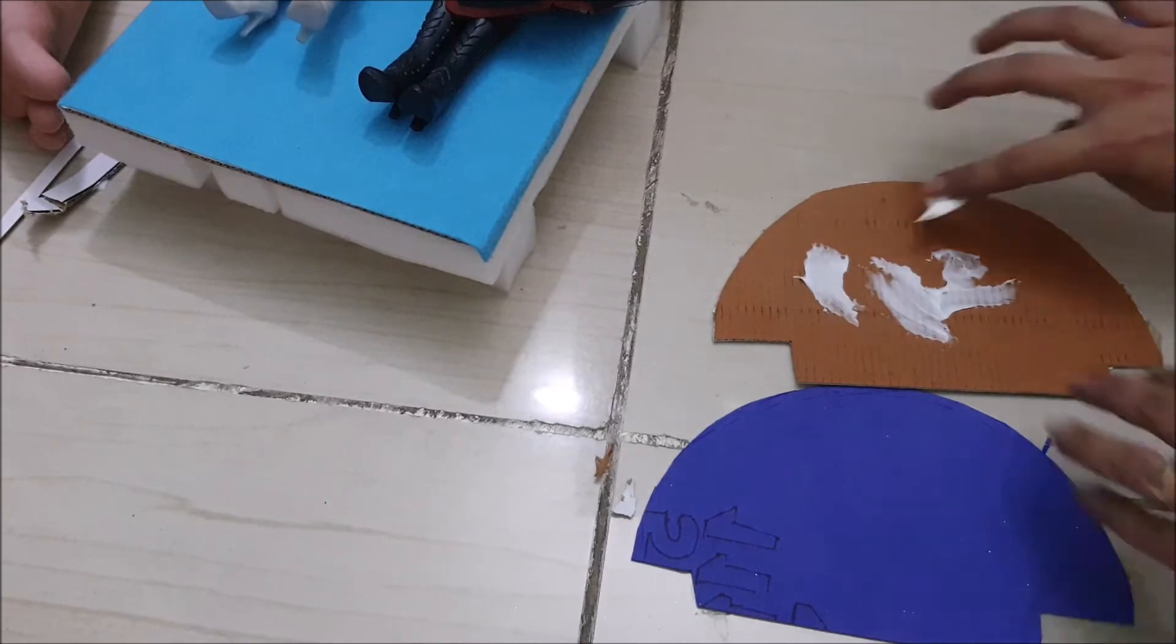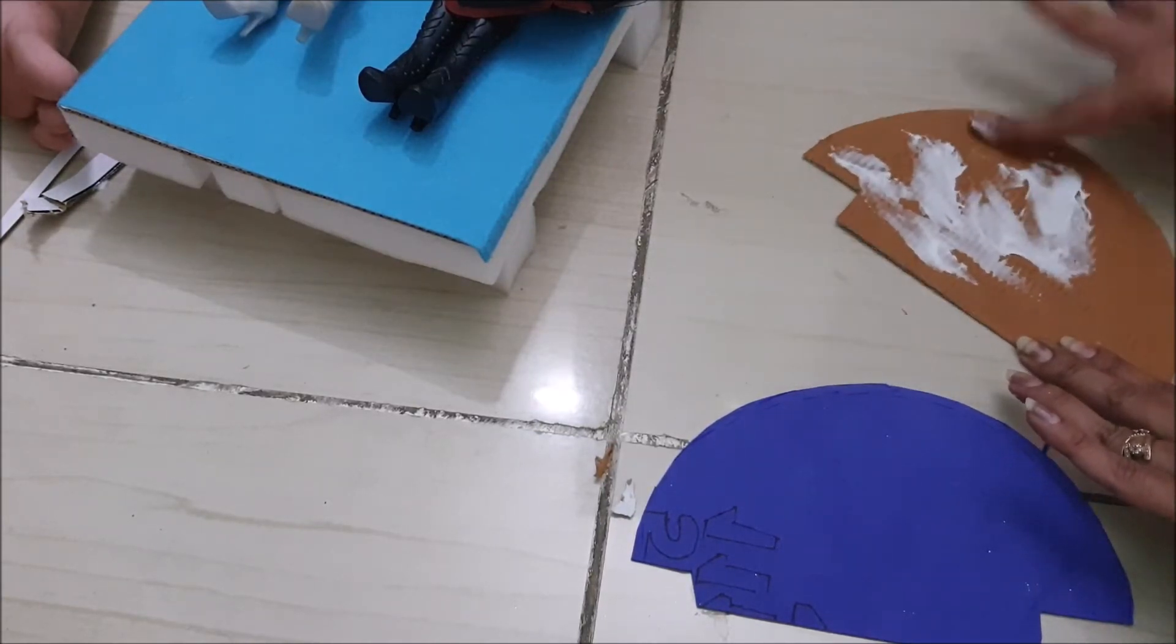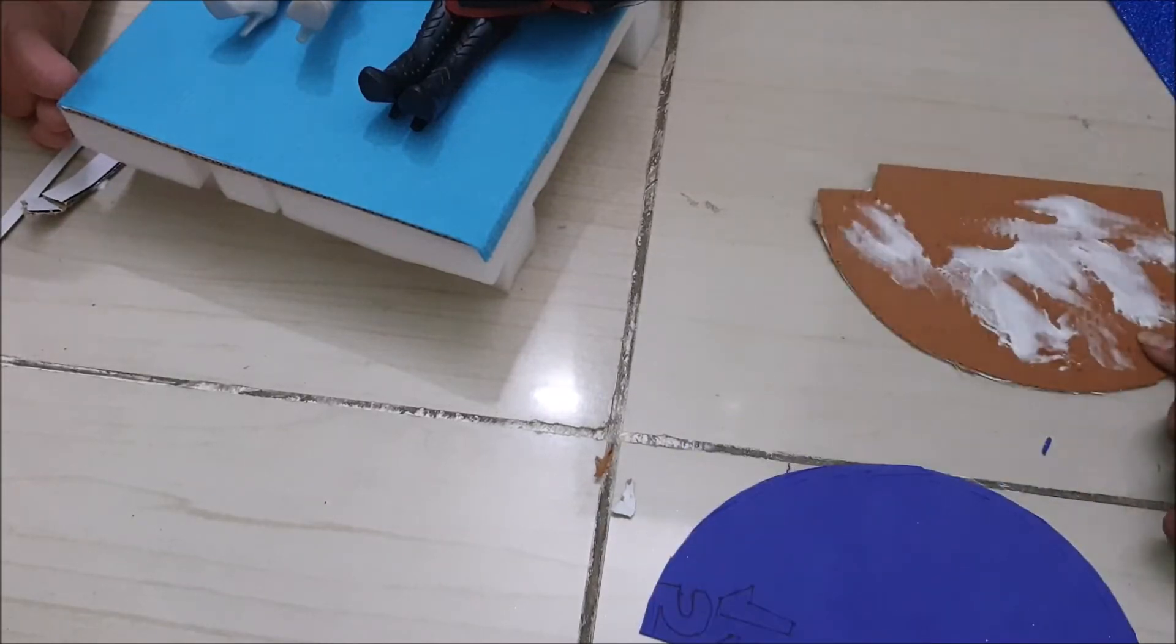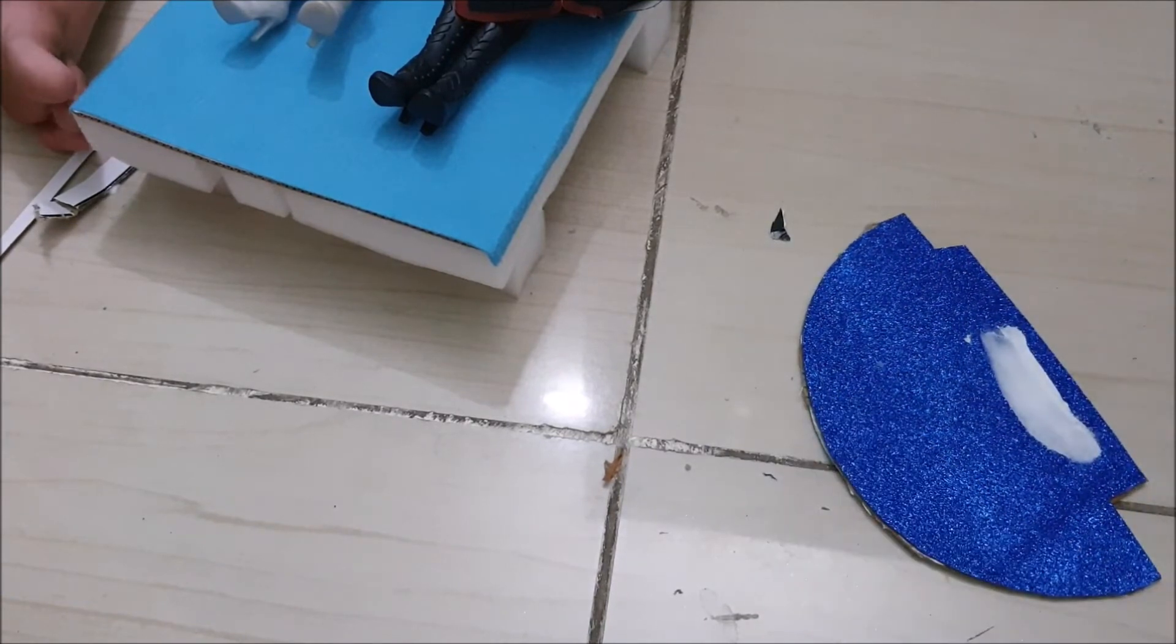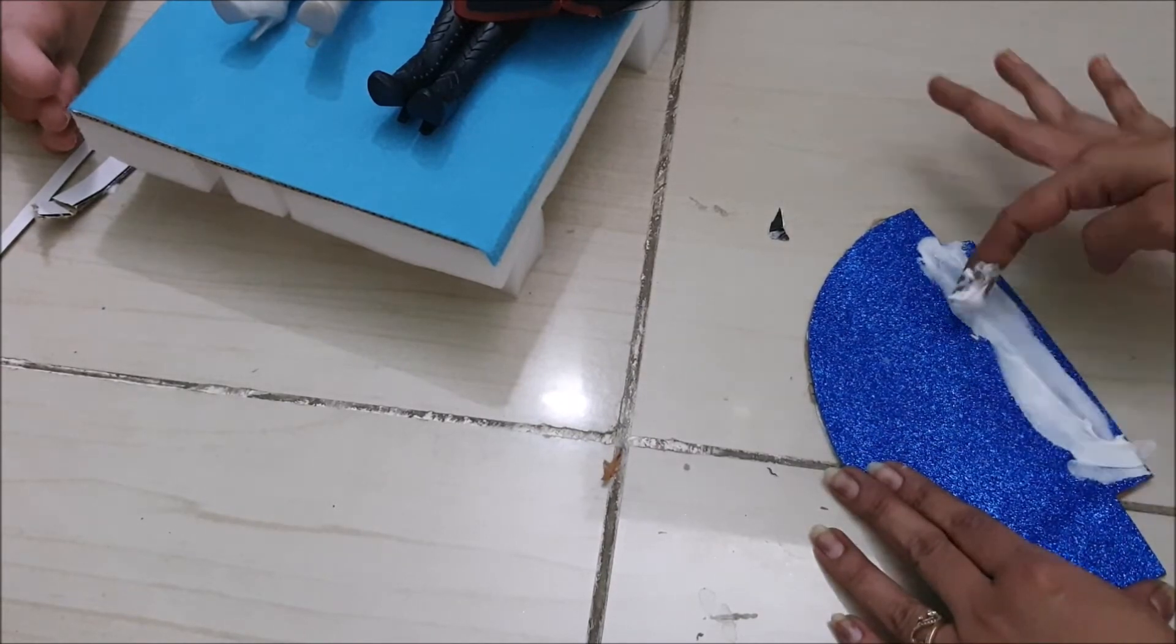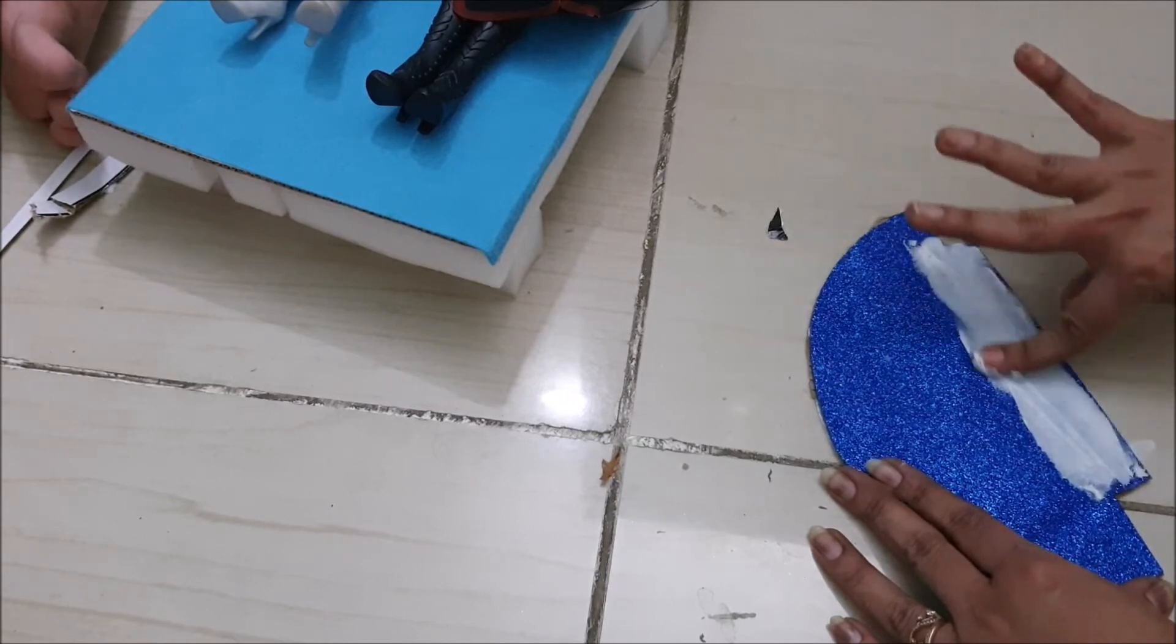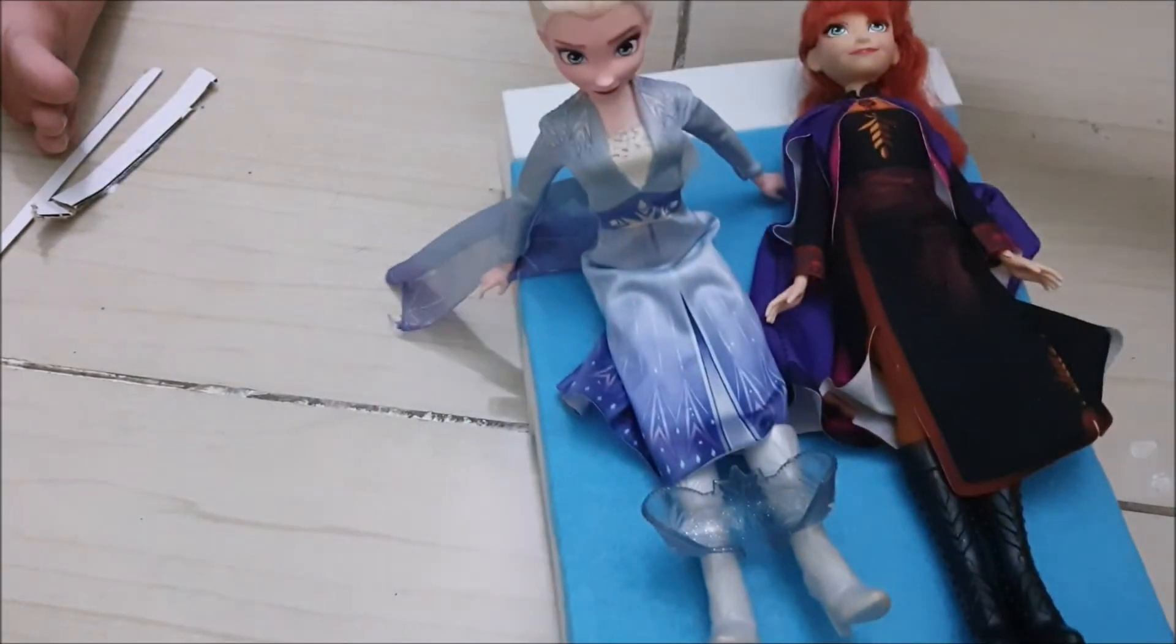We need to apply glue on the cardboard that you traced and cut, then stick that glitter paper on it. Now add some glue. You need to cut the same shape, but not the same shape. You can cut any shape. Now stick it to the bed.